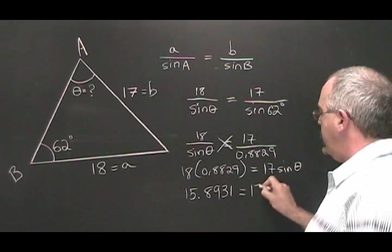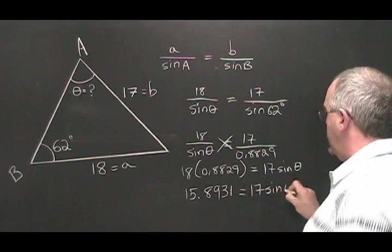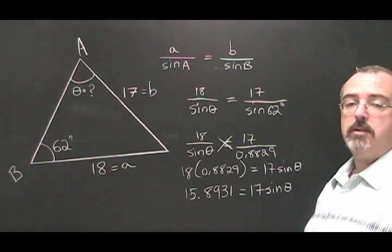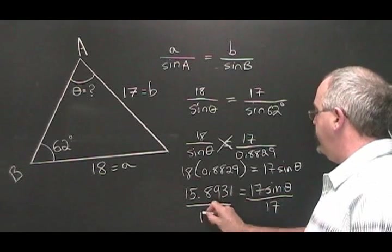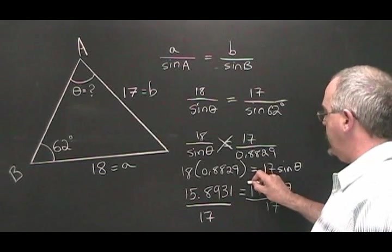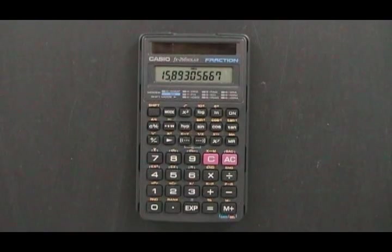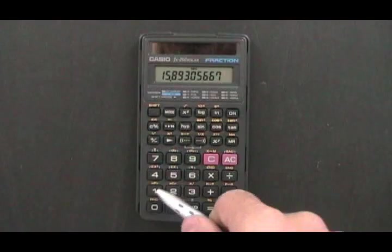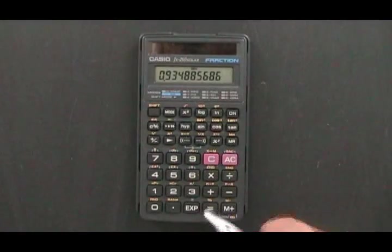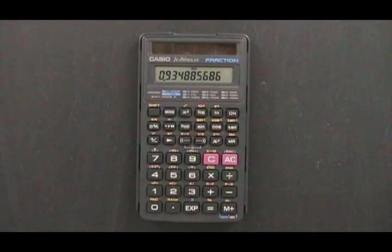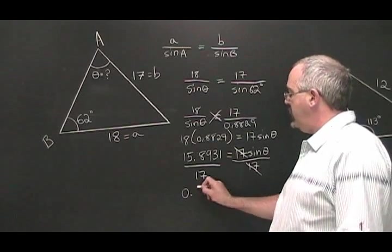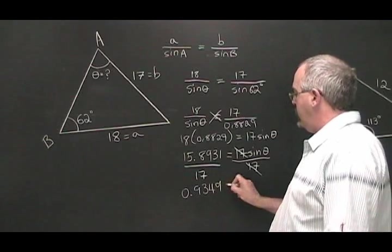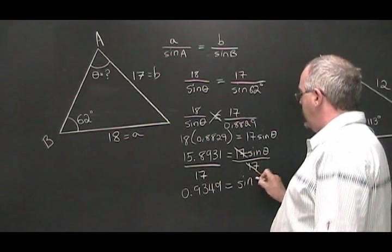We can divide both sides of this equation by 17. This will allow us to cancel our 17. 15.8931 divided by 17 is equal to 0.9349. 0.9349 is equal to sine of theta.